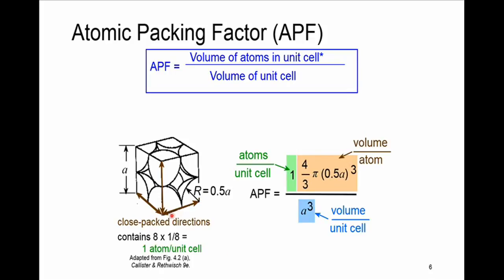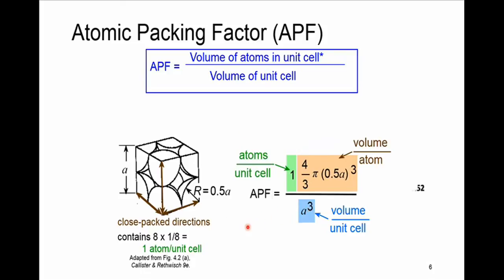Because the side of each unit cell equals A, we write APF as 1 atom times the volume of one atom, divided by the volume of the cube, A³. The radius of each atom is A/2, so we substitute R = A/2 into the atom volume formula. This results in an atomic packing factor of 0.52 for the simple cubic structure.